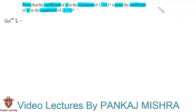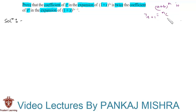We know that the general term, or the (r+1)th term, in the expansion of (a + b) whole raised to n is given by T(r+1) = nCr into a raised to (n minus r) into b raised to r. Therefore we can say that: